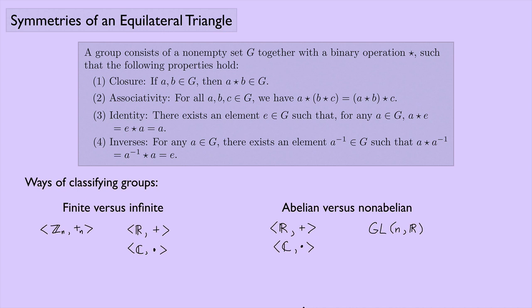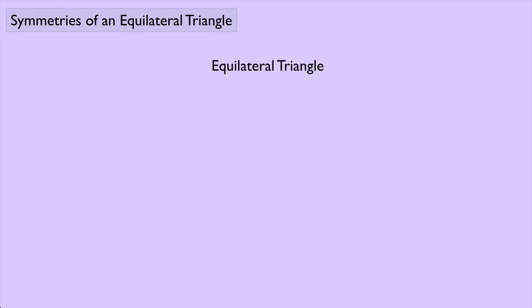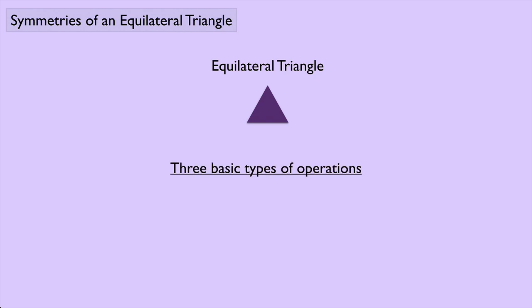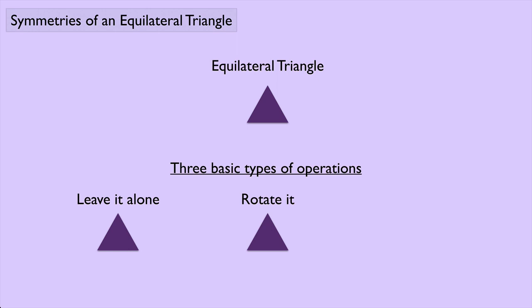Now I want to look at another example of a non-abelian group. We're going to look at equilateral triangles — all three sides the same and all three angles the same. We're going to look at three basic types of operations: things we can do to the triangle that put it back where it was. We could just leave it alone, we could rotate it, or we could flip it.